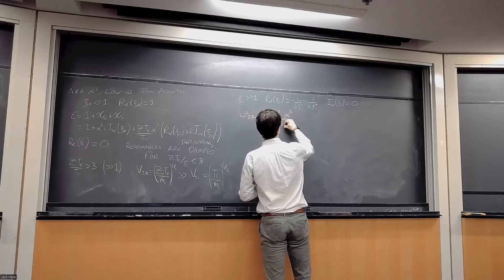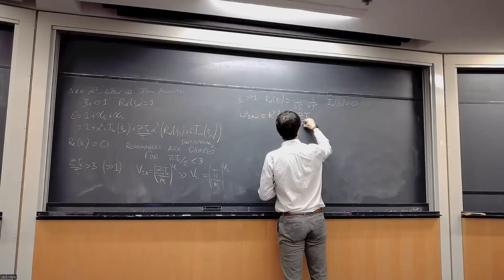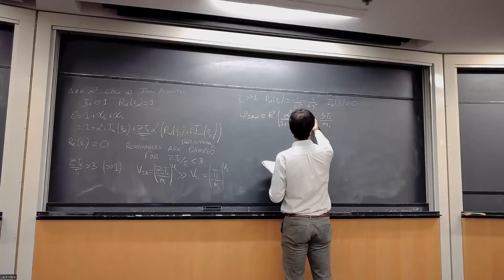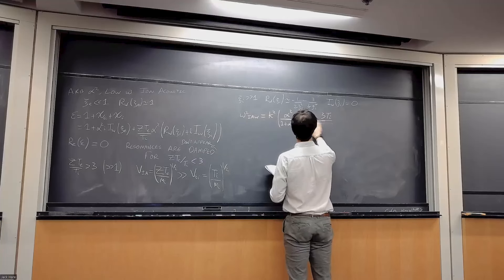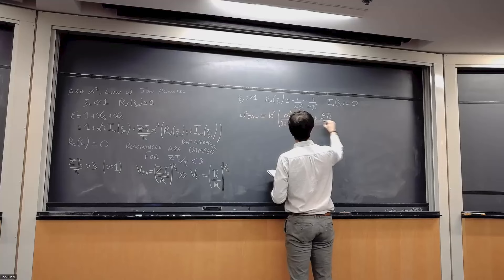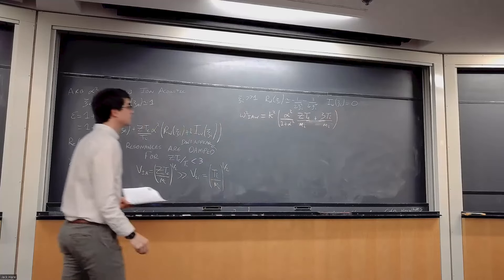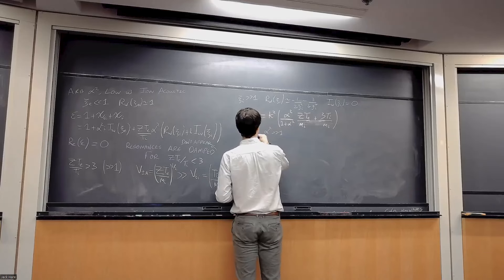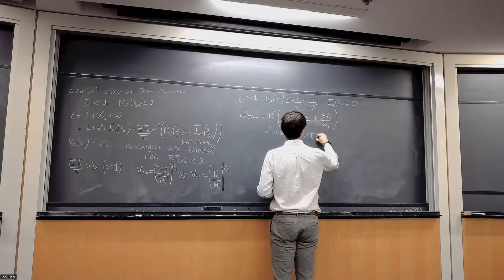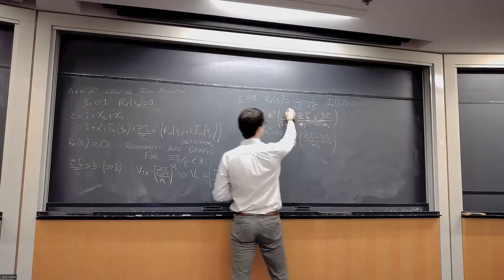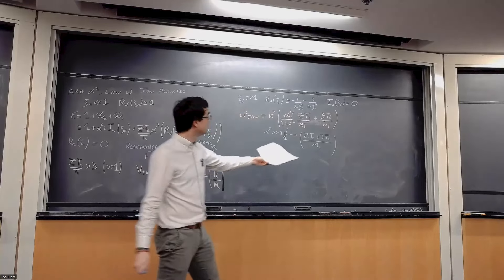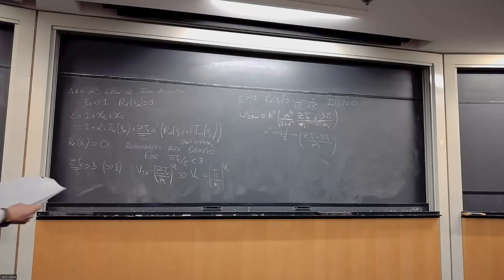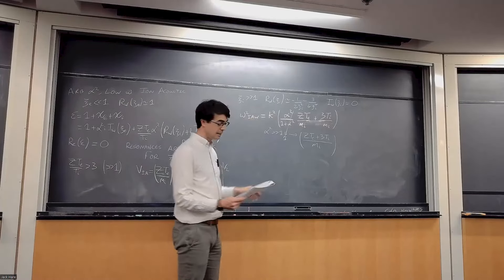Substituting into the permittivity and finding resonances where the real part equals zero, we find ion acoustic wave resonances at: ω²_IAW = k² · [α²/(1 + α²)] · [ZTe/Mi + 3Ti/Mi]. In the limit where α² is much greater than 1, this reduces to k² · (ZTe + 3Ti)/Mi, which looks much more like the familiar ion acoustic velocity. The (α²/(1 + α²)) factor approaches 1, giving the standard result.